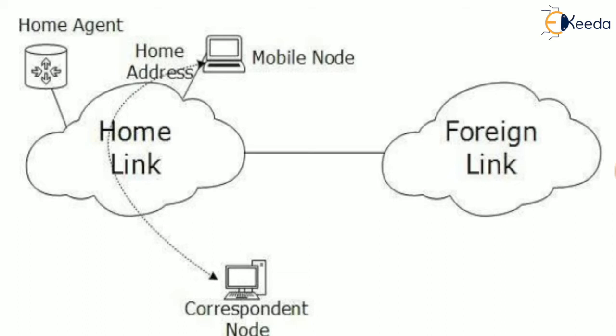Whenever this mobile node starts communication, it will use the address provided by the home network or home link. Here you can see the corresponding node, or correspondent node — the node that wants to make a communication with our mobile node. This correspondent node is using the address provided by the home network, and all the communication is happening using this home link.